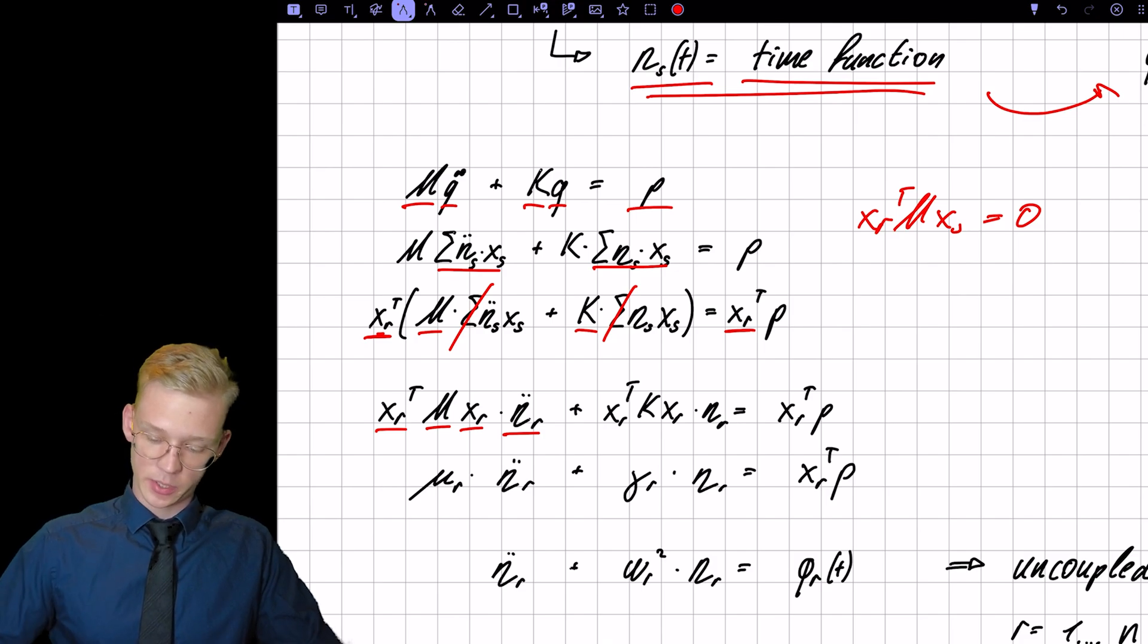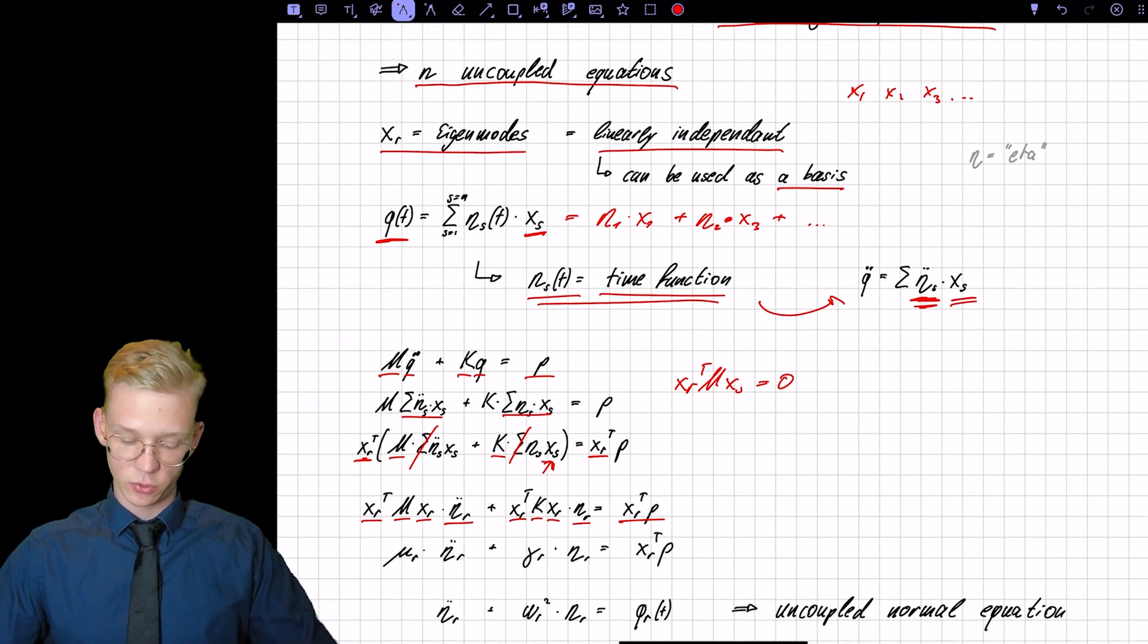XR transpose times the stiffness matrix times XR times our eta, our time function and our pre-multiply force that we had in addition to our system.